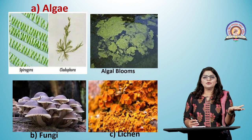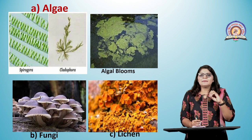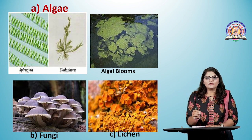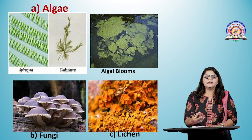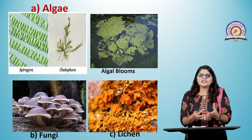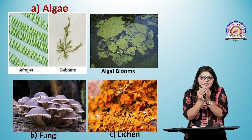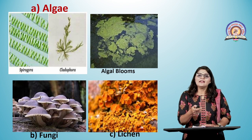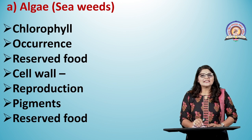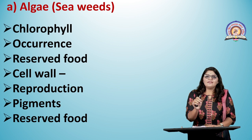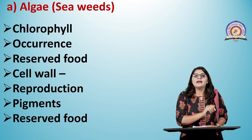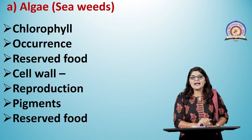Fungi is another group — also Thallophytes with a thaloid plant body lacking stem, root, and leaves. Fungi are non-chlorophyllous, meaning they do not have chlorophyll and appear whitish. Lichens are composite organisms — a symbiotic relationship between algae and fungi. The algal and fungal partners live together, forming the lichen thallus. Algae (seaweeds) are chlorophyll-bearing, green, and autotrophic. Majority of algae are aquatic — found in freshwater bodies (rivers, pools, ponds, streams) and marine water bodies (seas, oceans).